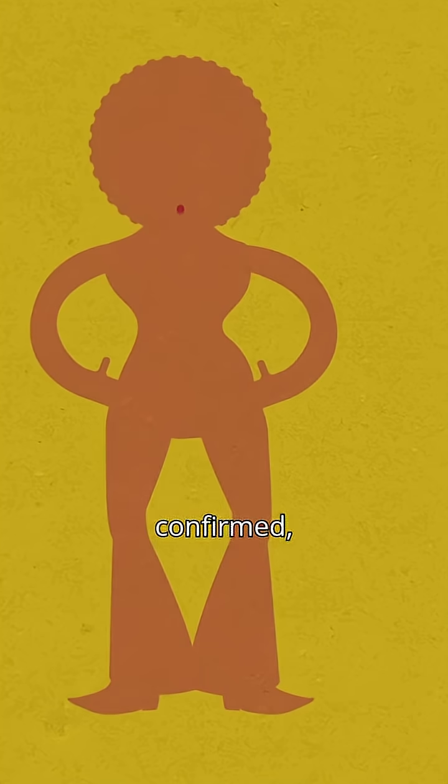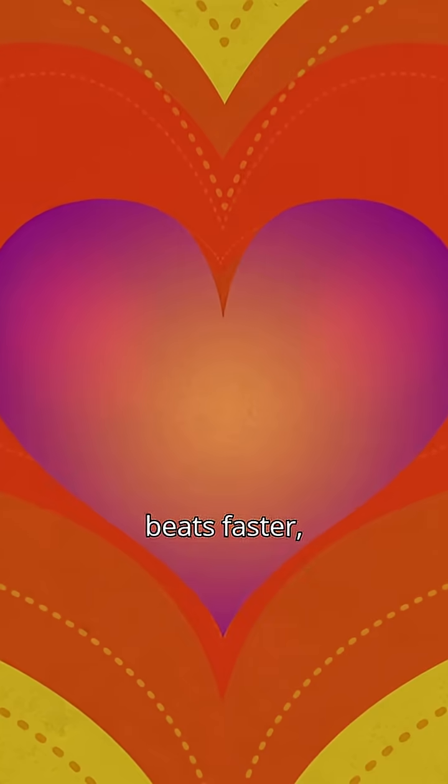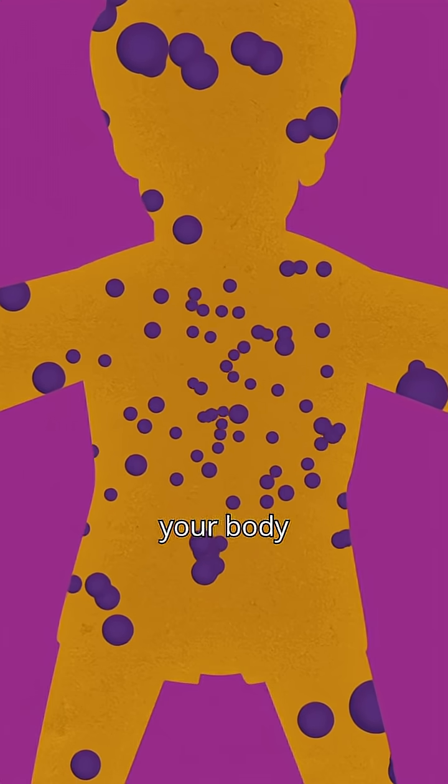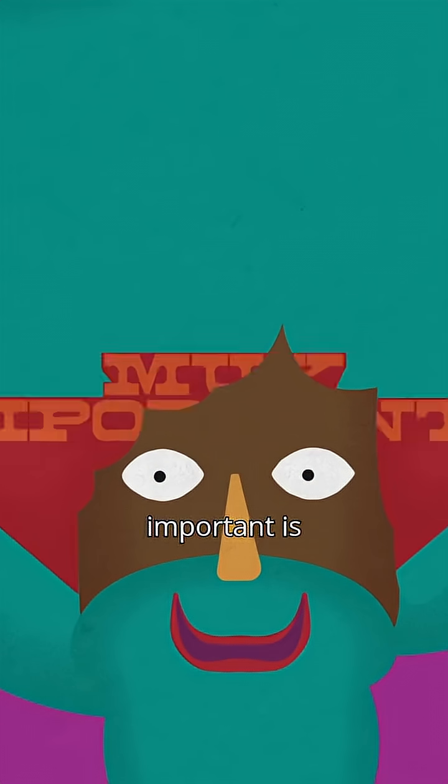Once attraction is confirmed, your bloodstream is flooded with norepinephrine, activating your fight-or-flight system. Your heart beats faster, your pupils dilate, and your body releases glucose for additional energy, not because you're in danger, but because your body is telling you that something important is happening.